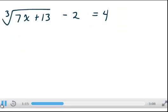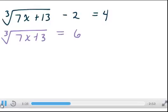Let's look at an example. The cube root of 7x plus 13 minus 2 equals 4. Step 1: Isolate the radical. So it's not by itself on one side of the equal sign. We need to add 2 to both sides. Now we have isolated the radical.